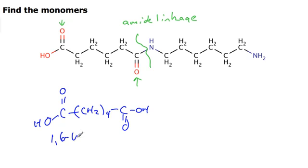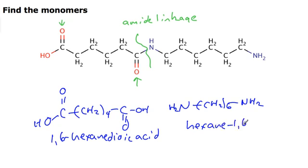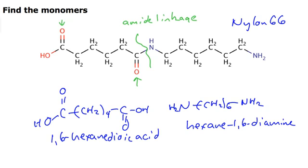The other molecule has an amino group, NH2, at the terminus — with six CH2 groups — giving hexane-1,6-diamine. Those two molecules make up this polymer, which is nylon — specifically nylon-66. And that concludes this video.